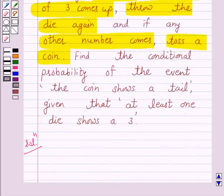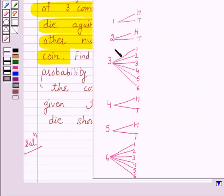Now the outcomes of the experiment can be represented in a diagrammatic manner called the tree diagram. So here when we throw a die, any number from 1 to 6 can appear.